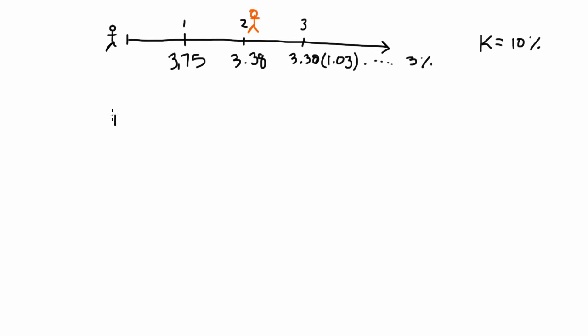Using that perpetuity formula, we have P2, and this is equal to the dividend one plus G, the G in this case is 3%, over K minus G. So, the discount rate here is 10%, and the growth rate, once again, is 3%. When you plug that in, we have a terminal value of $49.73.